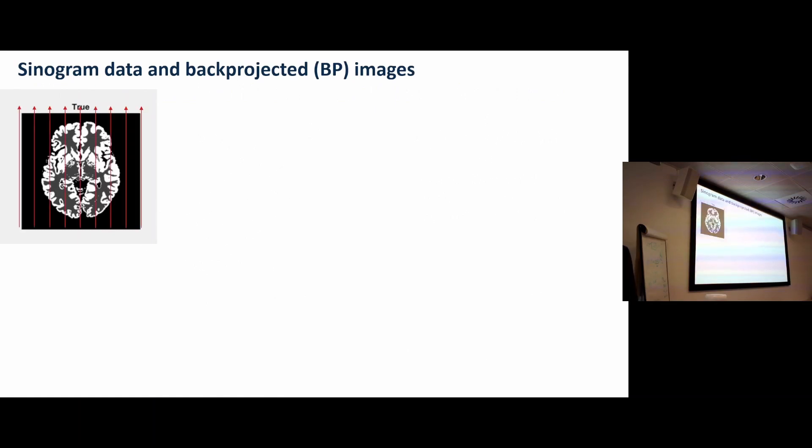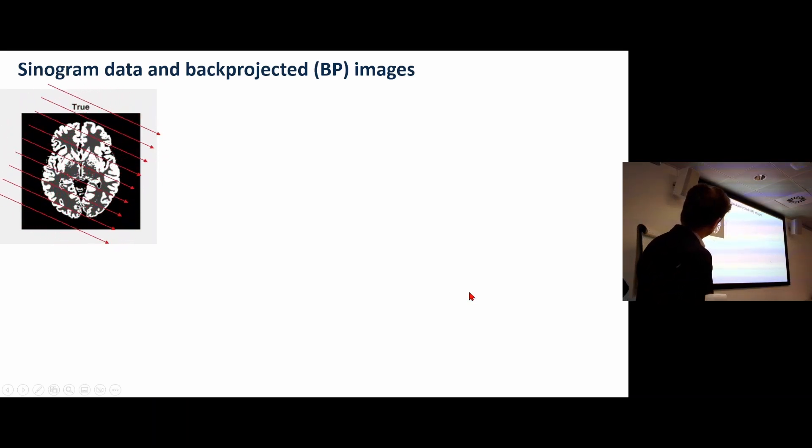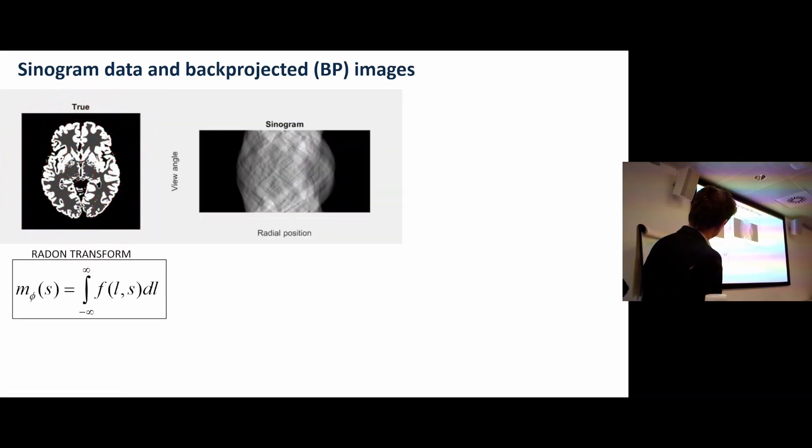There's an example of a true object. If we forward project it using the Radon transform we'll get a sinogram. That's the formula for the Radon transform or 2D x-ray transform.